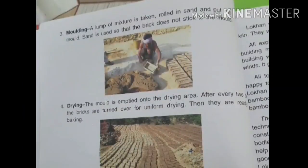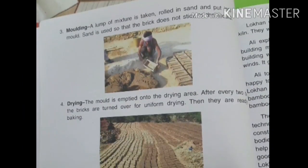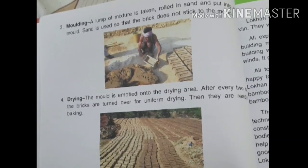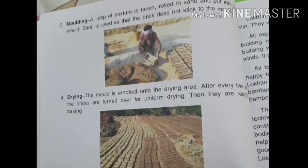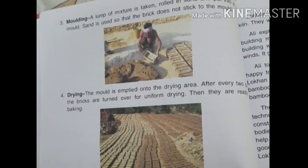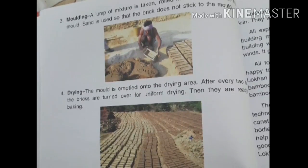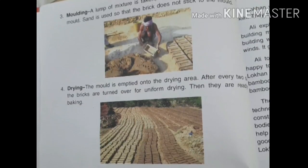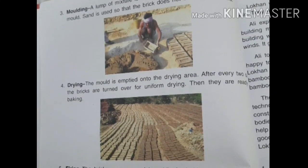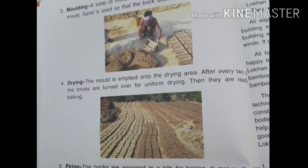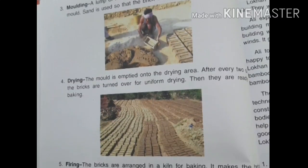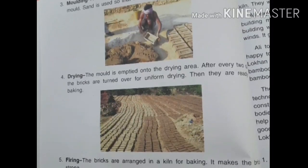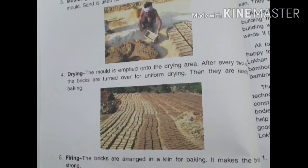Once the dough is prepared, the next process is molding. We take a lump of the mixture, roll it in sand, and then put it into molds. As you can see in the picture, there is a mold in which we put the mixture. Can you tell me why we roll it in sand? So that the brick does not stick to the mold.